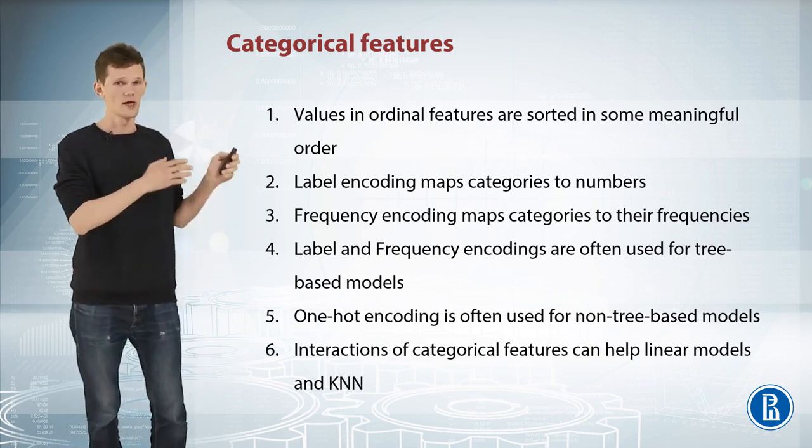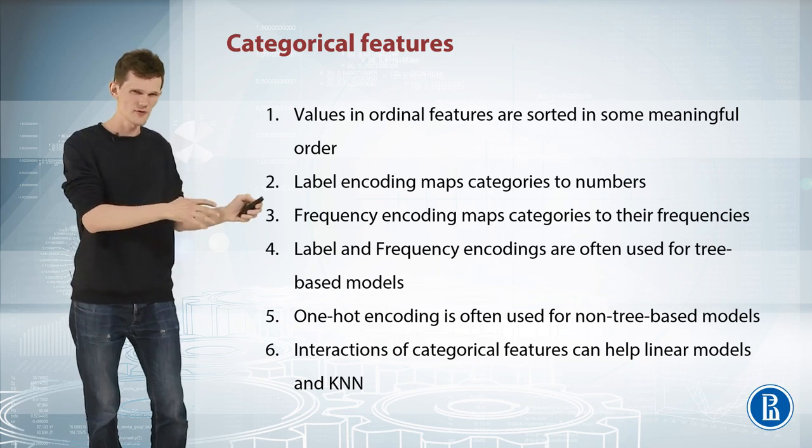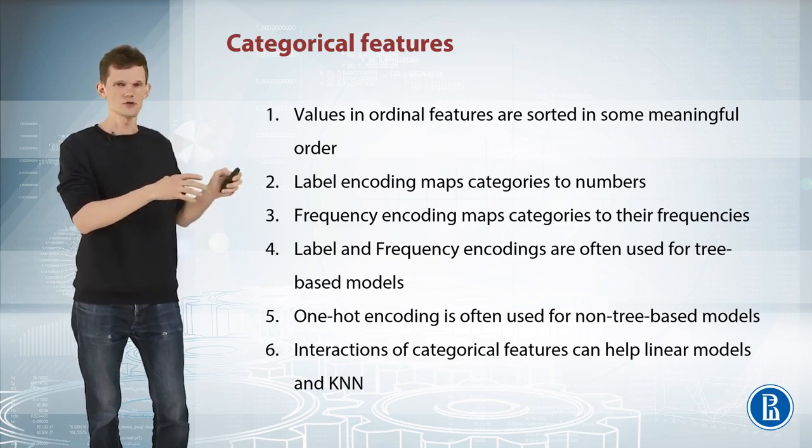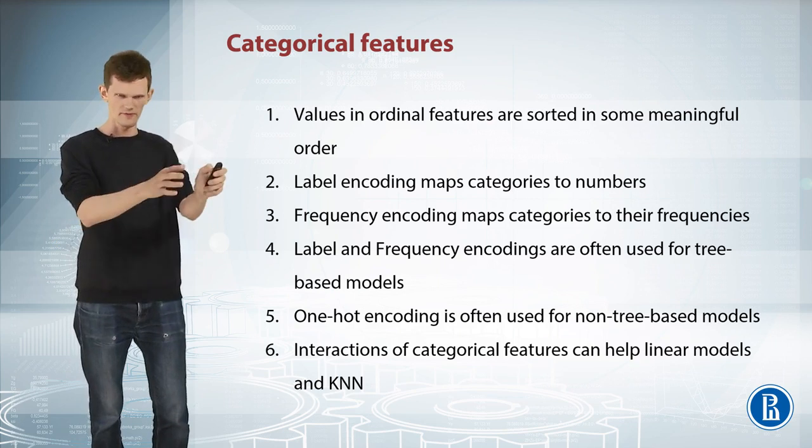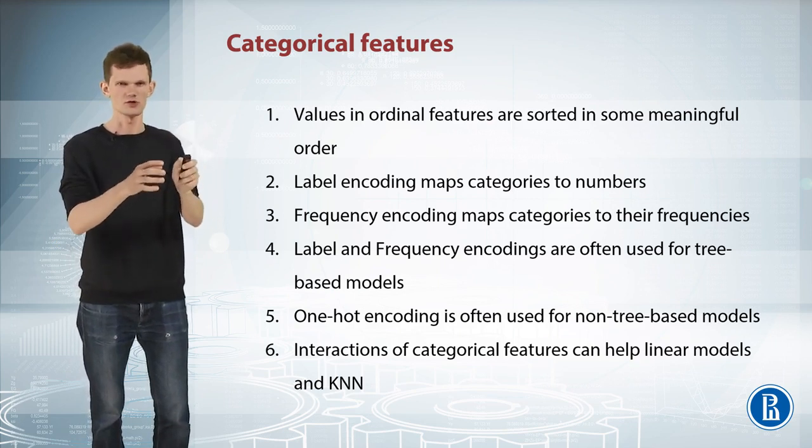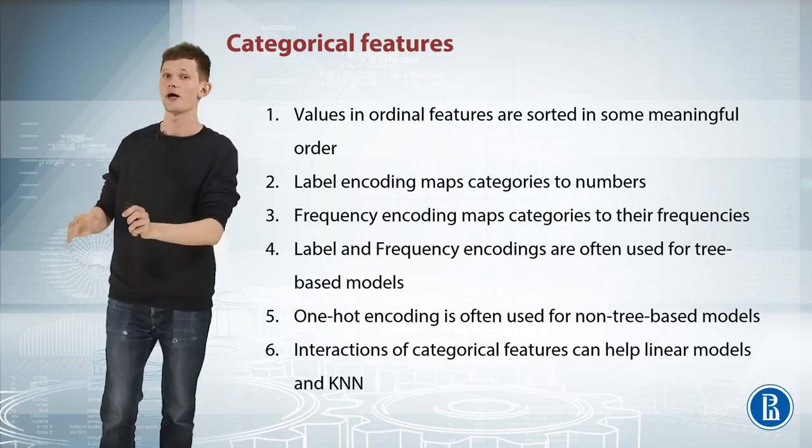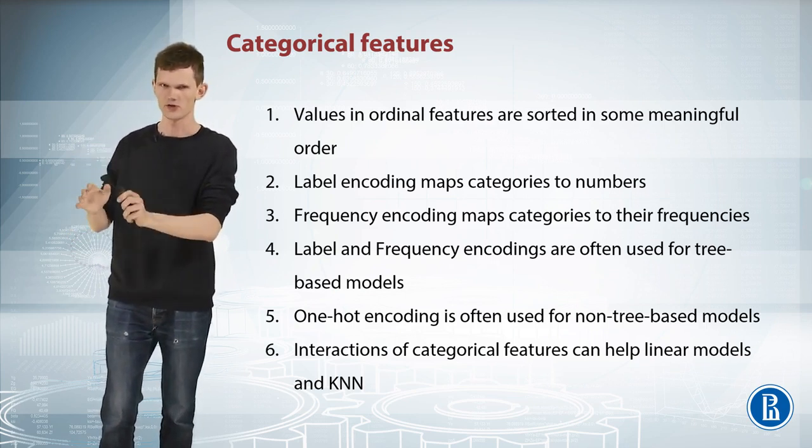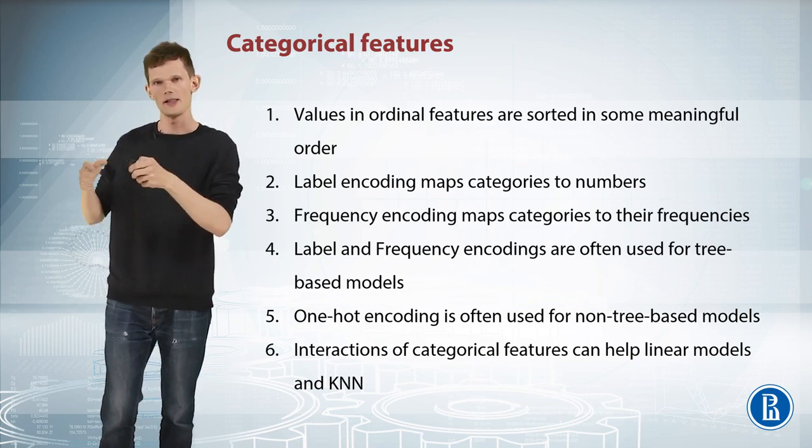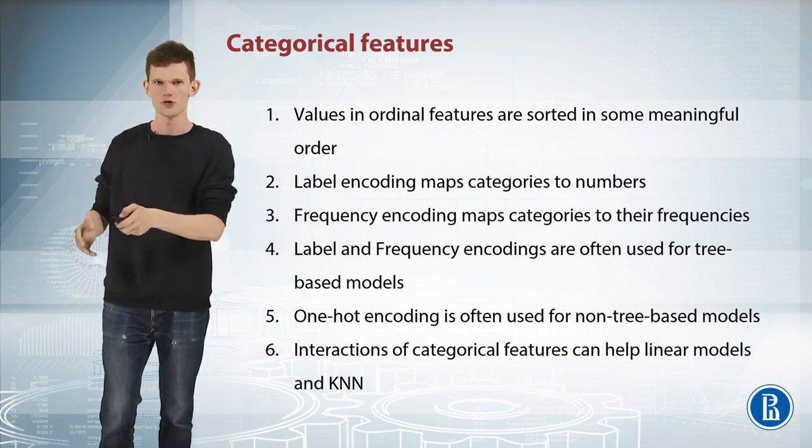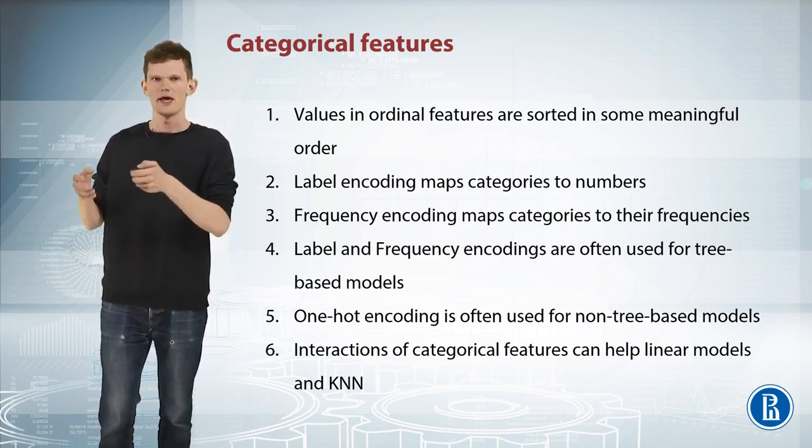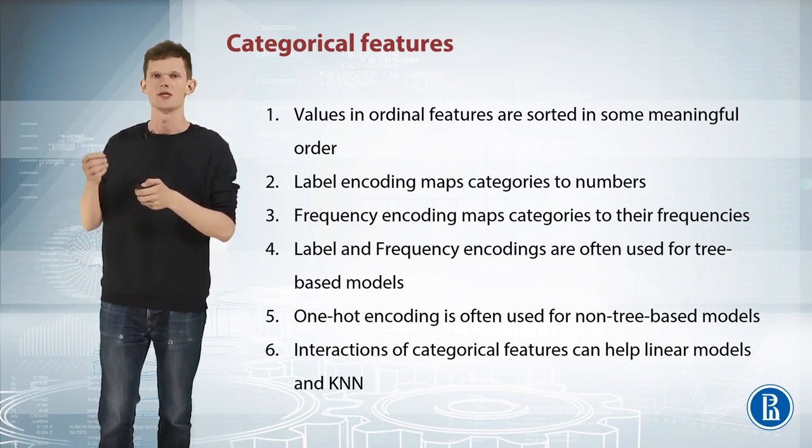Fourth, label encoding and frequency encoding are often used for tree-based methods. Fifth, one-hot encoding is often used for non-tree-based methods. And finally, applying one-hot encoding to combinations of categorical features allows non-tree-based models to take into consideration interactions between features and improve.